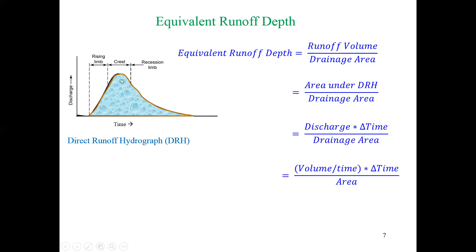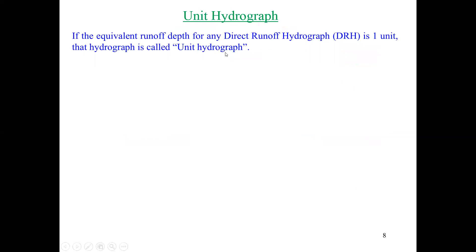The runoff volume is the area under the direct runoff hydrograph. To get that area, split the whole region into small parts and sum the discharge multiplied by delta time. Dividing by the drainage area gives you the equivalent runoff depth. The units work out: discharge is volume over time, multiply by time, divide by area, and you get depth.